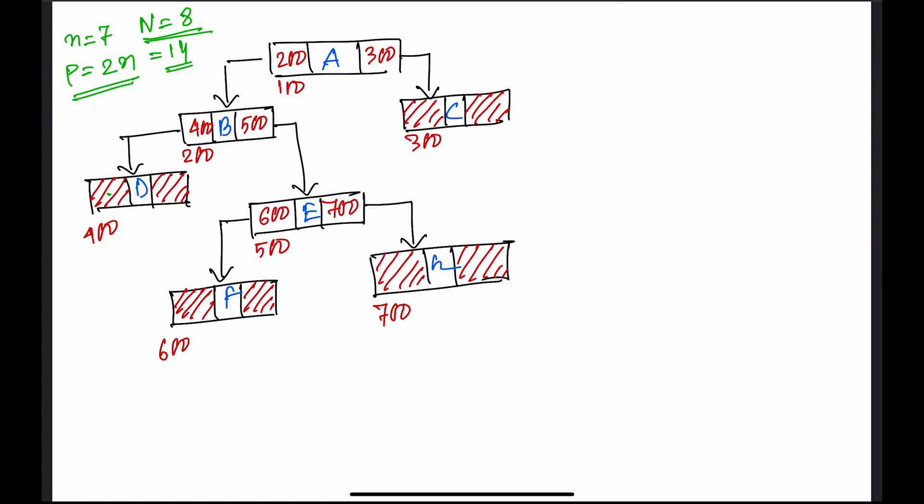We can use these null pointers to create threads. A left null pointer can be used to store the address of the inorder predecessor of a node, and a right null pointer can be used to store the address of the inorder successor of the node. These are the core concepts of threading.